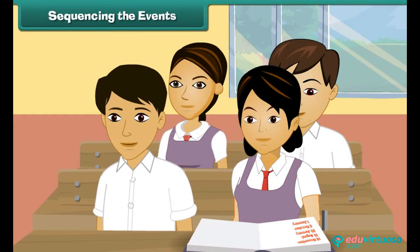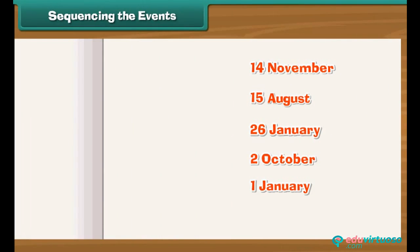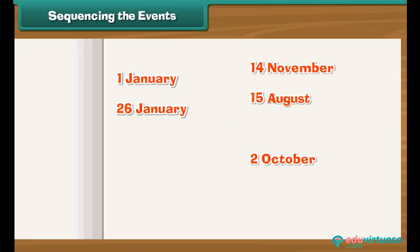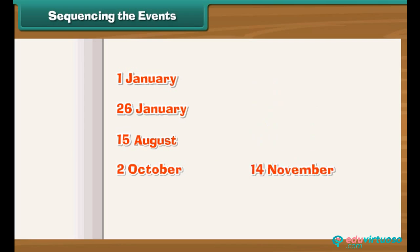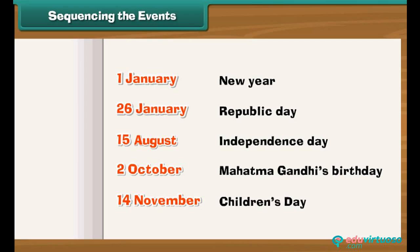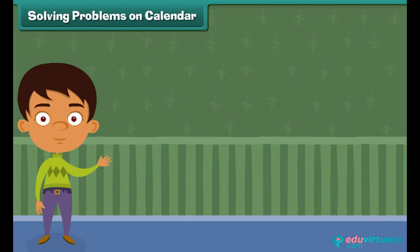Anu is at school. She has listed some important dates in a jumbled manner. Let us help her arrange the days in the order they come in the year: New Year, then Republic Day, then Independence Day, followed by Mahatma Gandhi's Birthday, and lastly Children's Day, which is the birth date of our first Prime Minister Pandit Jawaharlal Nehru.